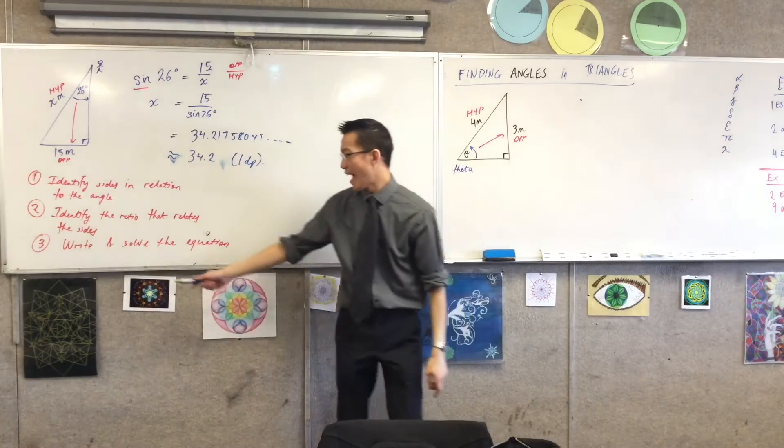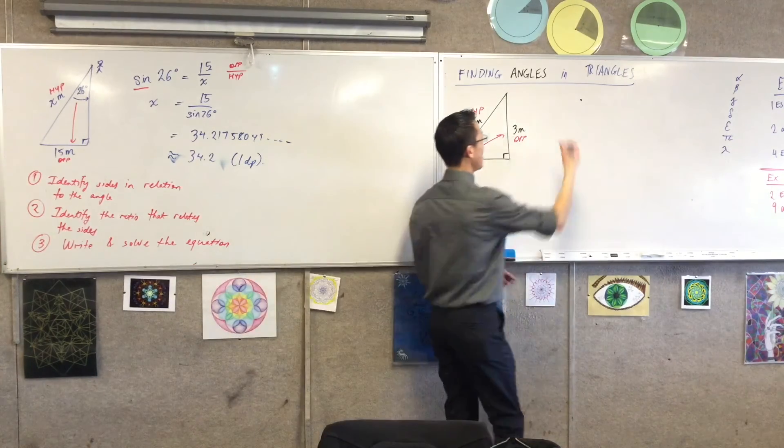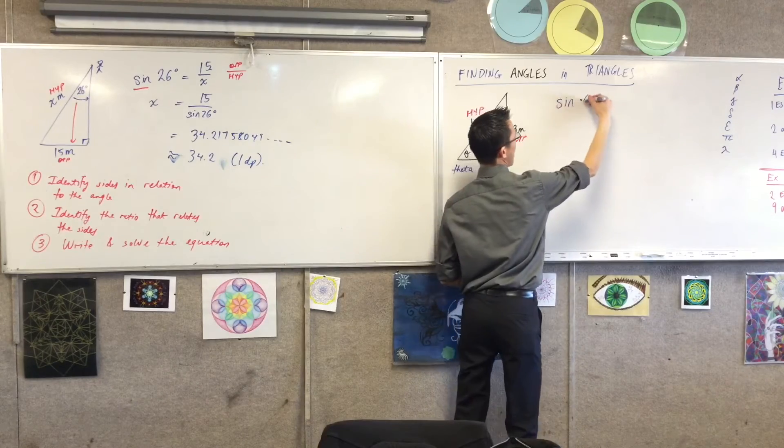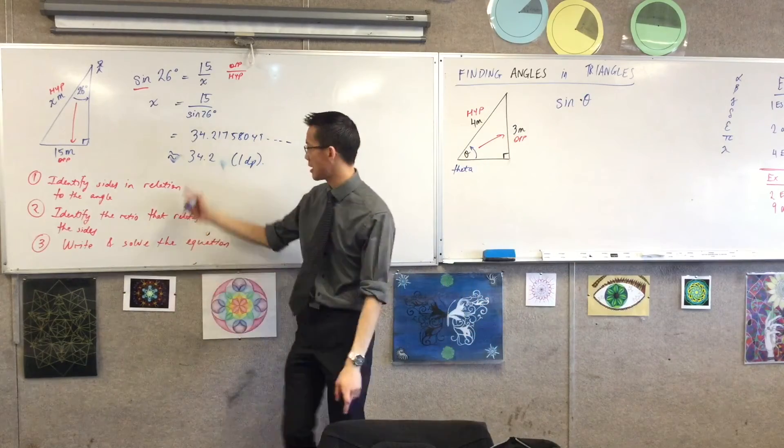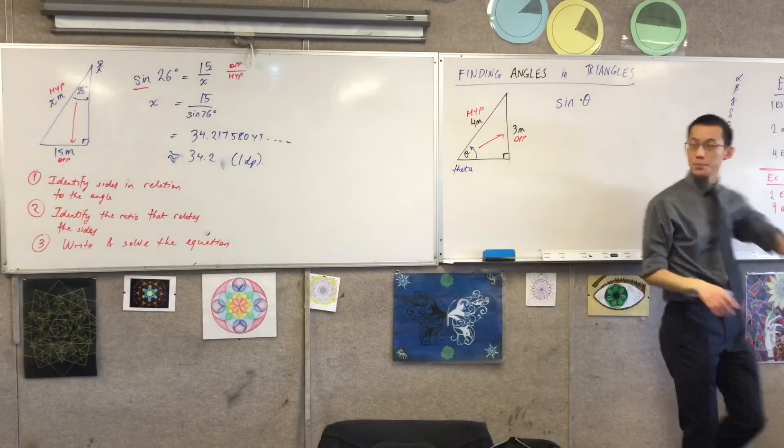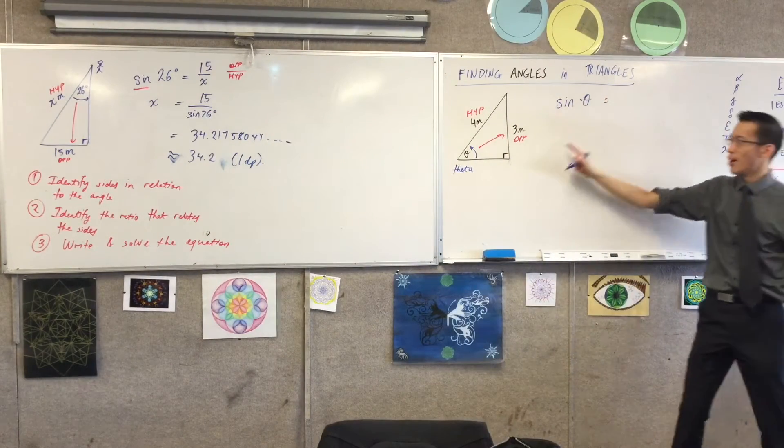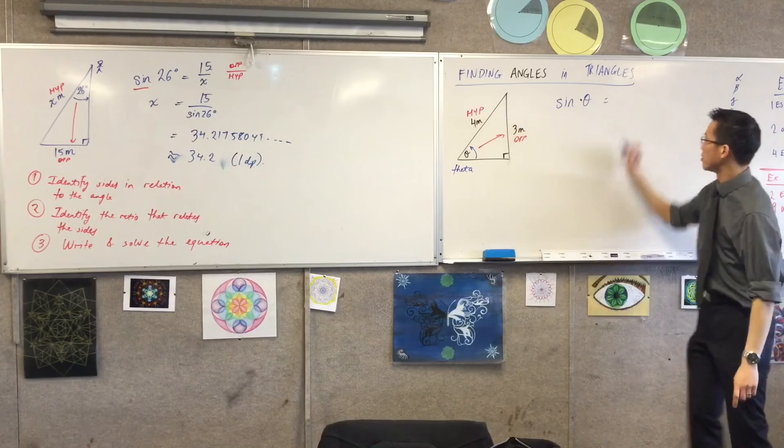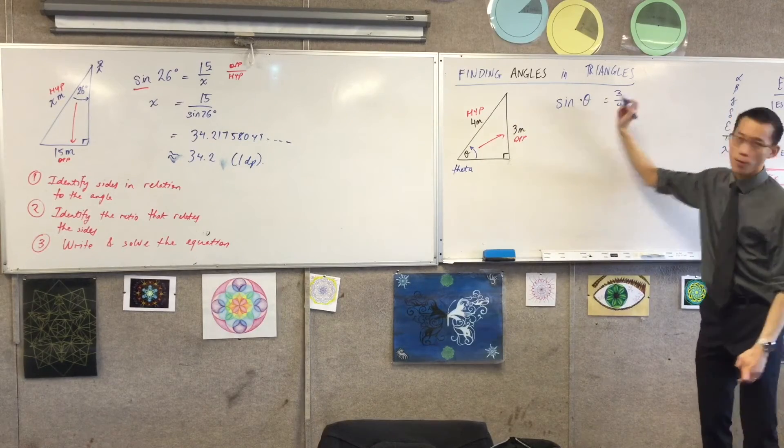So I'm going to now write and solve an equation. Sine, but this time, I don't know what the angle is. I can't say 26 degrees or 30 degrees or whatever. So I'll just write down what it is for a second. It's equal to opposite on hypotenuse, 3 over 4.